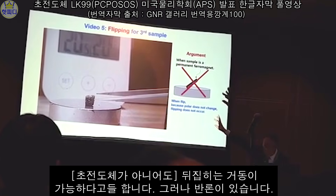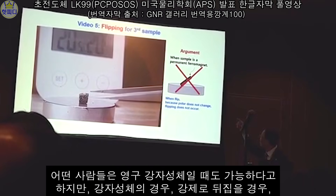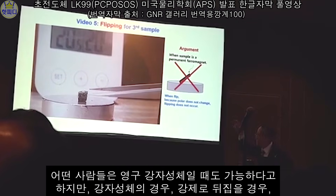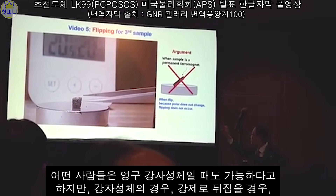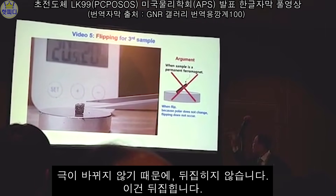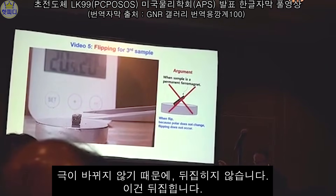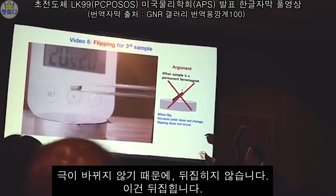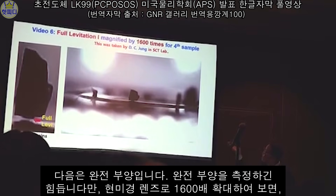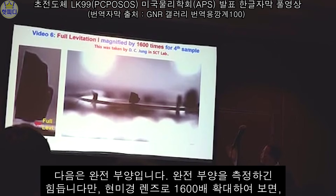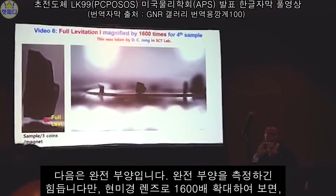This is a flipping — it's possible. However, there is an argument: some people say the sample is a permanent magnet. However, because the polarity doesn't change, in this case flipping is possible. It's a full relaxation — it's so difficult to measure full relaxation. However, magnifying 1,600 times with microscopic lenses, you can understand.